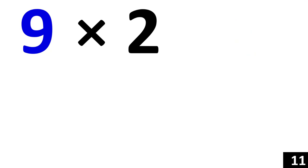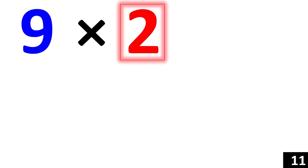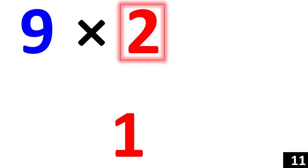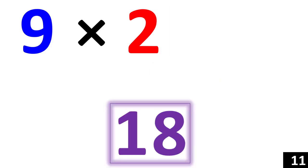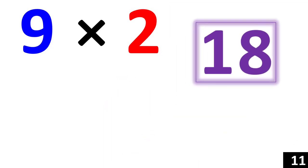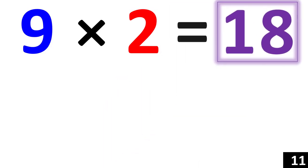Moving right along — 9 times 2. Starting from the number 2, 1 less than 2 is 1. So, 1 is your first number. Then we say, 1 plus what number would give us 9? 8. Therefore, 18 is your answer.